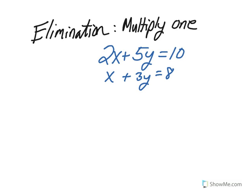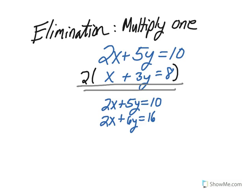So if we multiply the bottom equation by 2, we get the following. I recommend always rewriting both equations. That prevents you from making any mistakes.